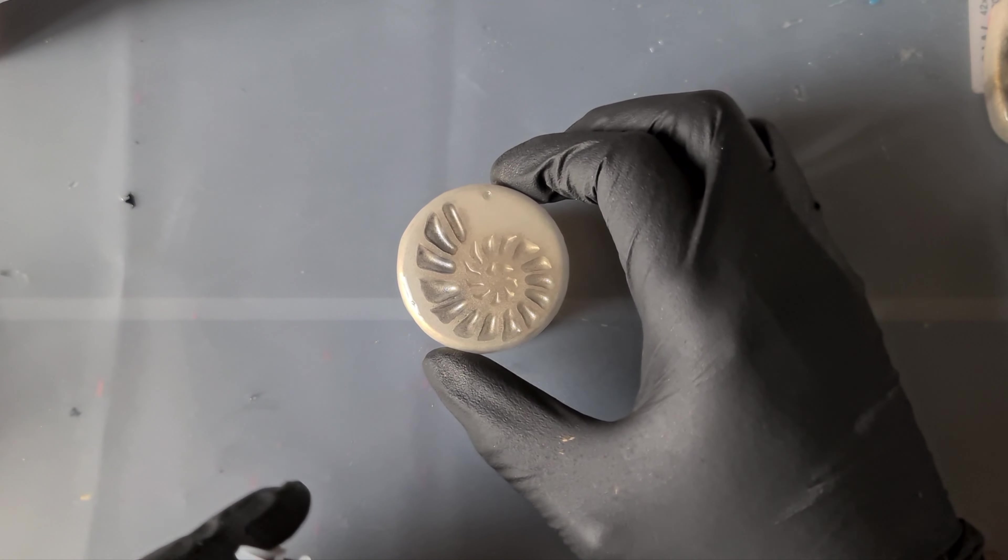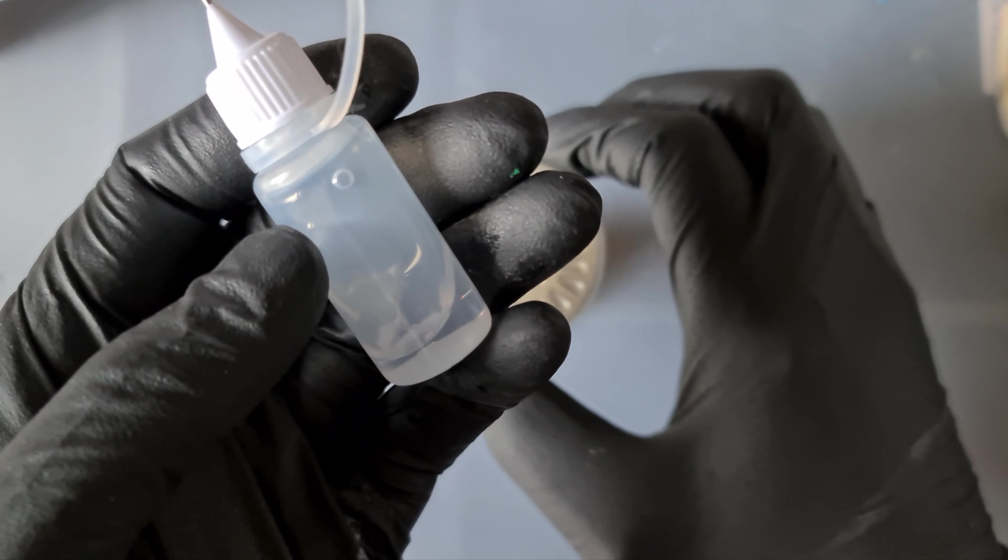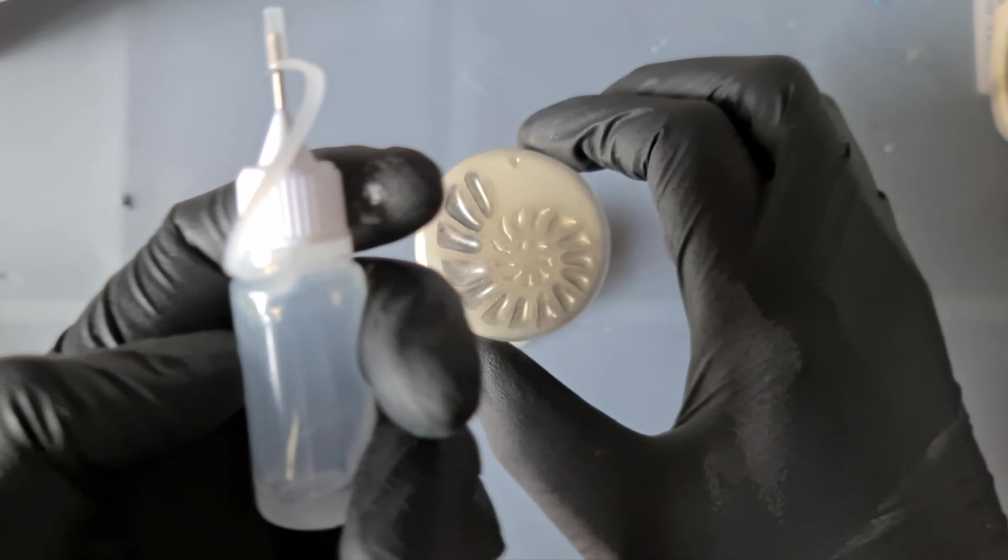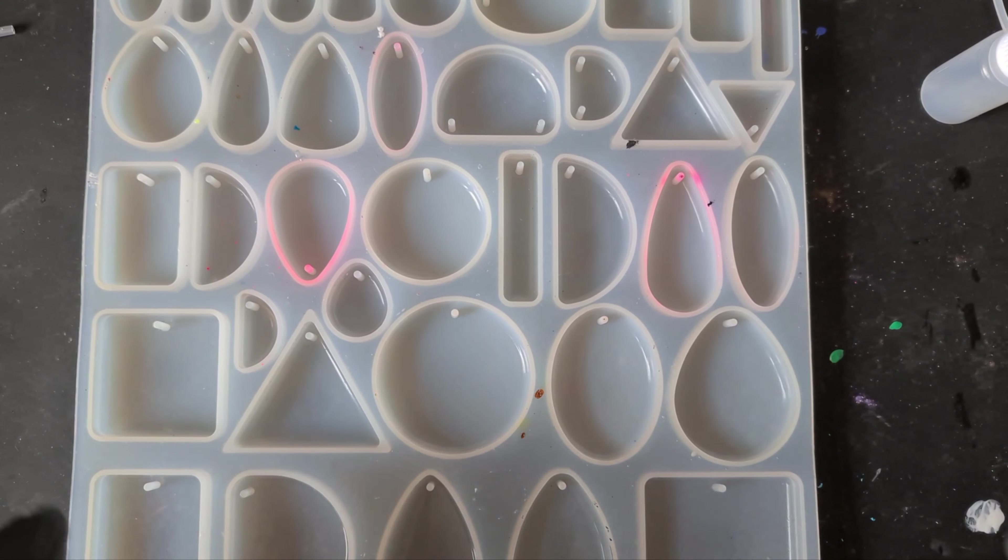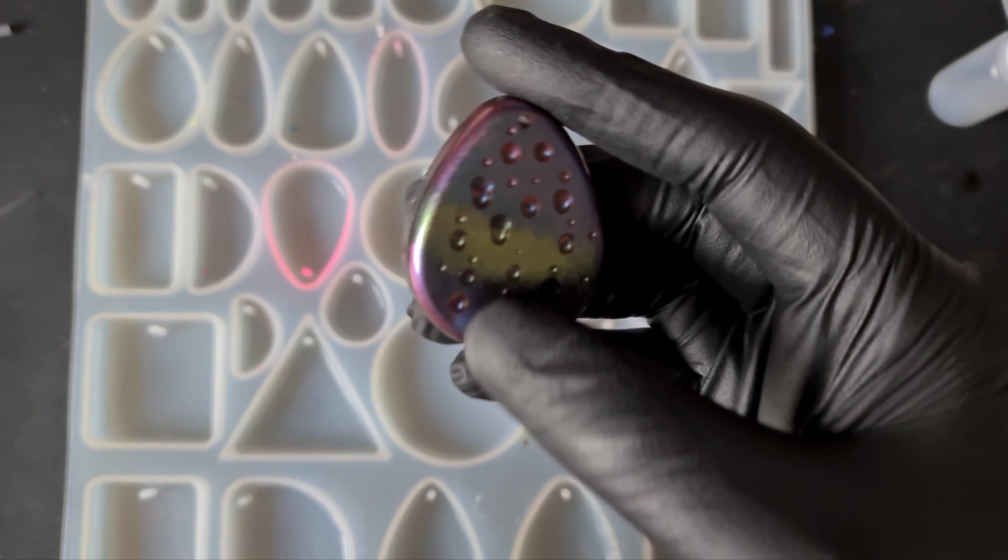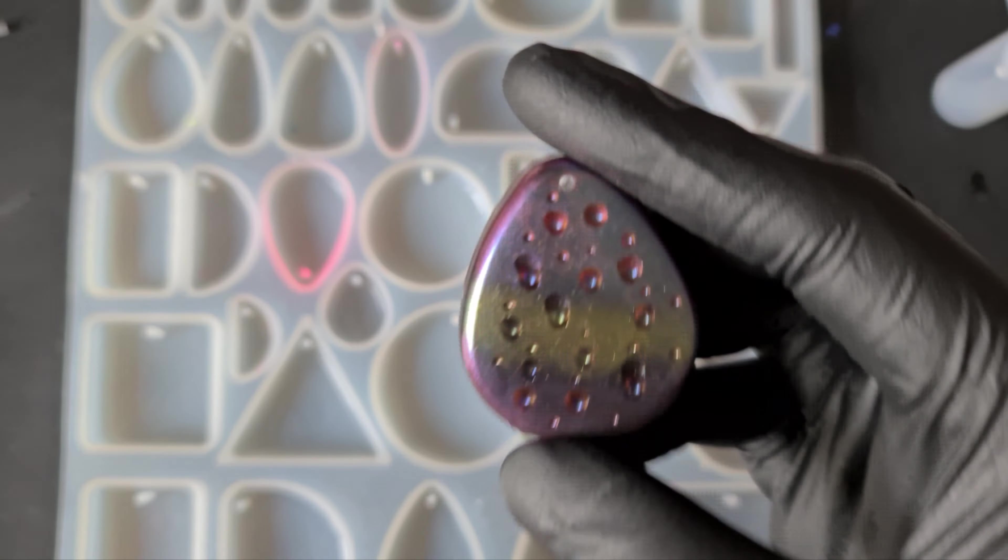For this video we're going to be using UV resin in a needle tip bottle to create this fossil effect. Let's go. Right, we're back. Going back to my previous video, the effect really got my brain ticking as to what can be done with this effect, specifically with UV resin.